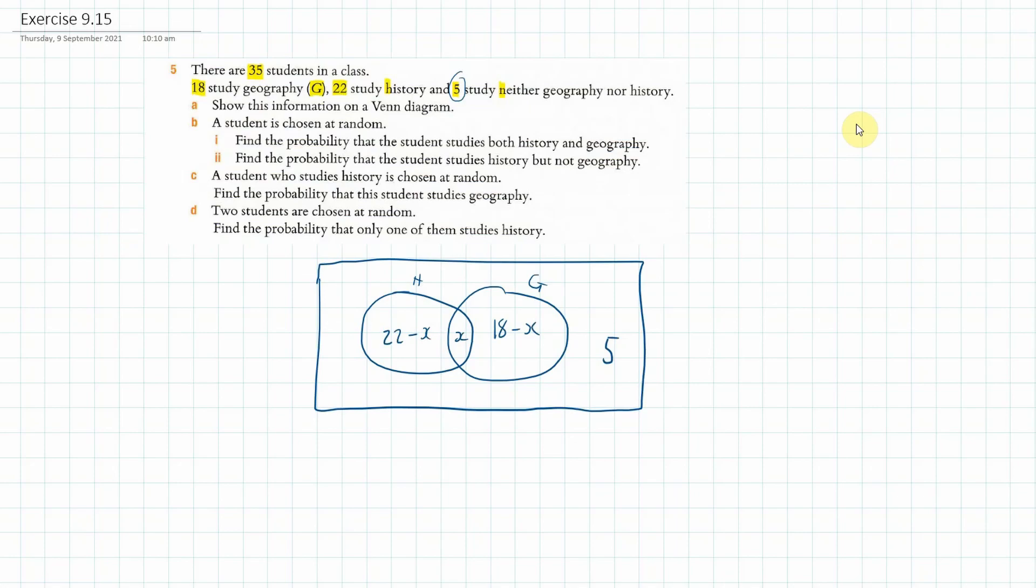And then we probably want to find out what those are. So all together there's 35. So 35 should be equal to 5, and then we add all these other things up, plus 22 plus 18. And then we gather our x's and it's just going to be 1 minus 1x because x minus 2x ends up being minus x.